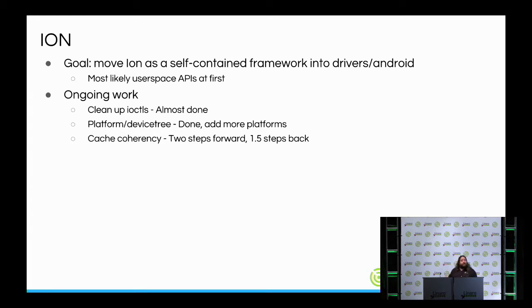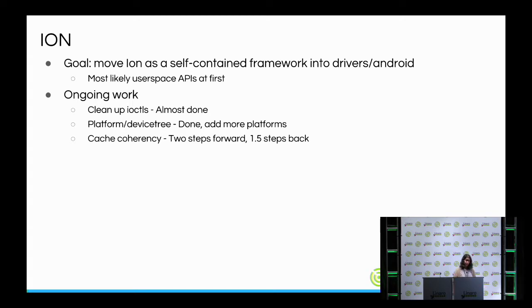Next is Ion. As a framework, Ion is making progress although it's still slow. The eventual goal is to try and move Ion as a self-contained framework into drivers, similar to what happened to the binder driver. We'll probably focus on user space APIs first, and then add in-kernel APIs as use cases come up. There's been some work cleaning up the ioctls, which have generally been reviewed, and a little more work is needed to add more ioctls to make the ABI work easier.